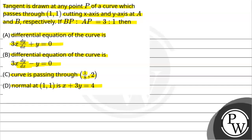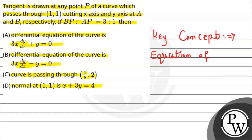Now let's start with the solution. Before that, let's talk about the key concept we are going to use here. We simply need the equation of tangent, which is given by y minus y₁ equals f'(x) into (x minus x₁), where (x, y) are coordinates and f'(x) is the slope of the tangent.